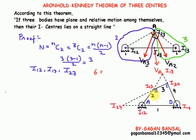Now suppose we have links one, two, and three in relative motions to each other with plane motions. Total number of i-centers will be three between links one, two, and three: i-12, i-13, and i-23. From this figure, i-12, i-13, and i-23 lie on a straight line.